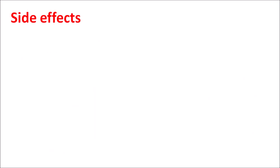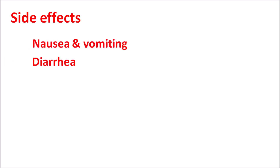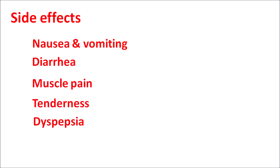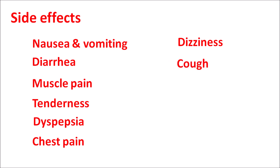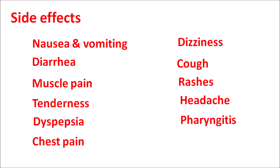The side effects of pravastatin include several gastrointestinal effects such as nausea, vomiting, and diarrhea. It can also cause muscle pain, muscle tenderness, and dyspepsia. Additionally, it may produce chest pain, dizziness, and upper respiratory tract infections resulting in cough. Rashes, headache, pharyngitis, and fatigue can also be observed with pravastatin.